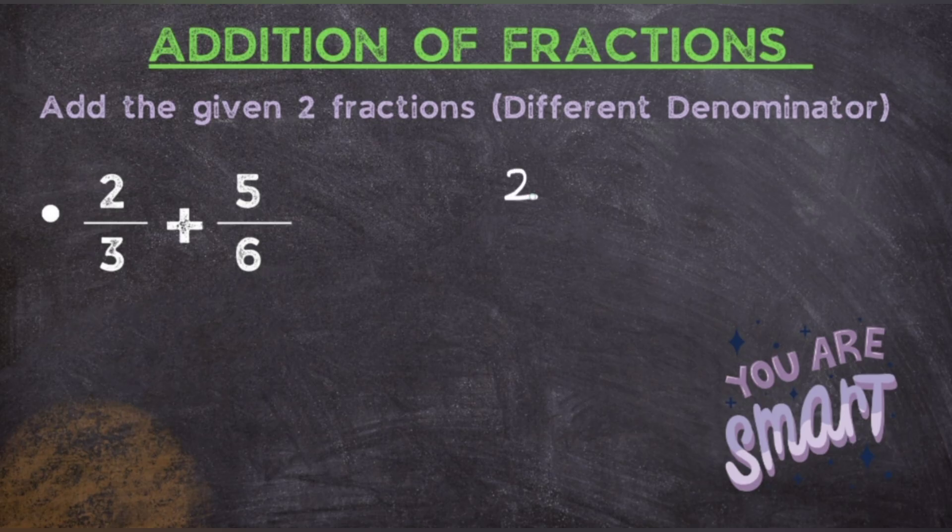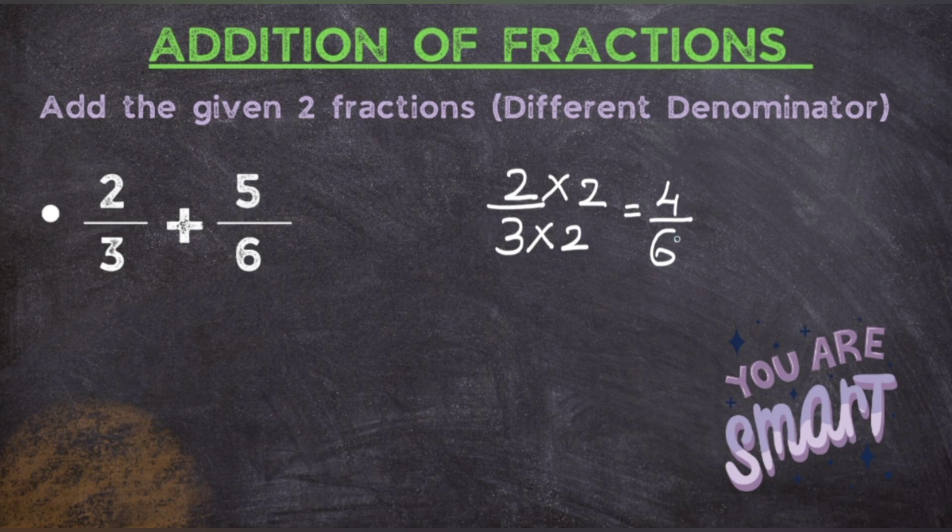Find the equivalent fraction for this by changing the denominator to number 6. How is it possible? By multiplying it by 2. Multiply both numerator and denominator by 2, and that helps us in getting the fraction 4 upon 6.